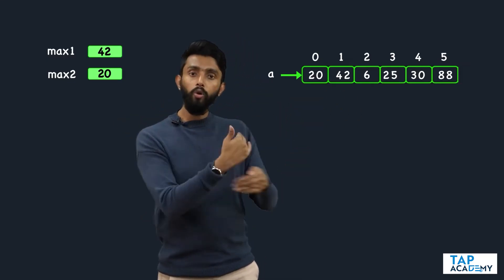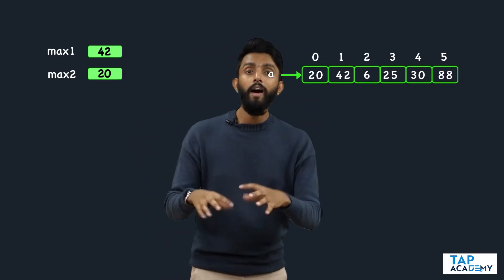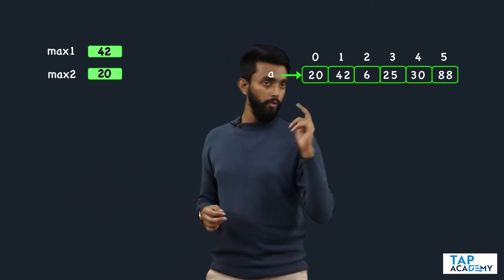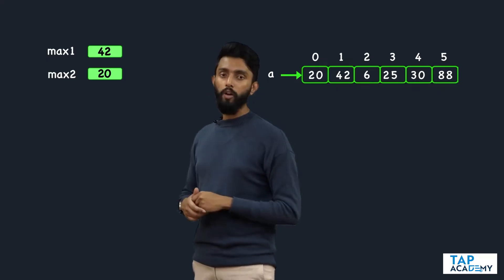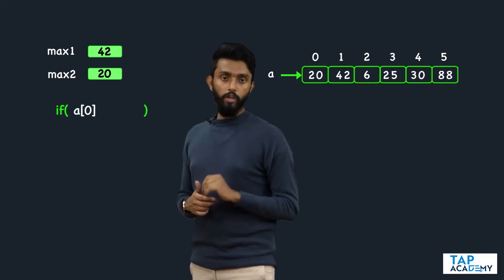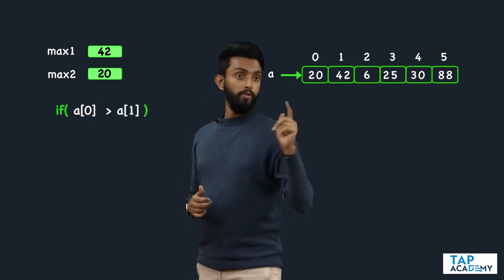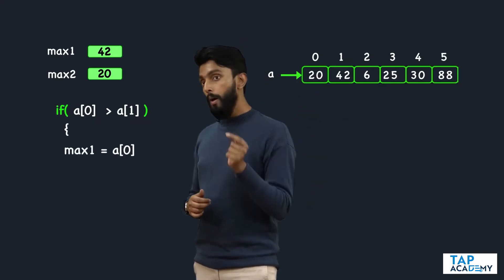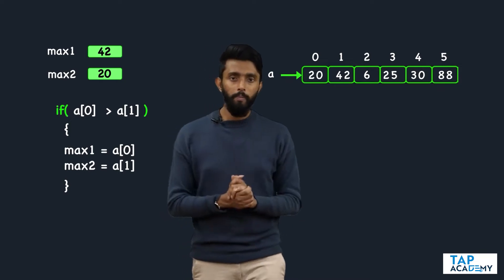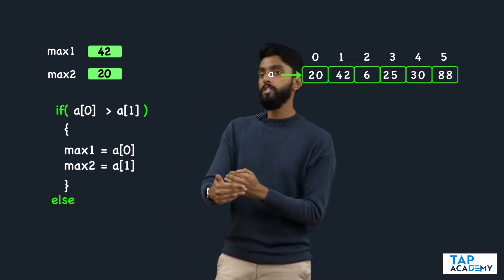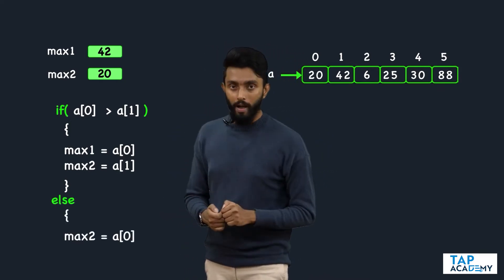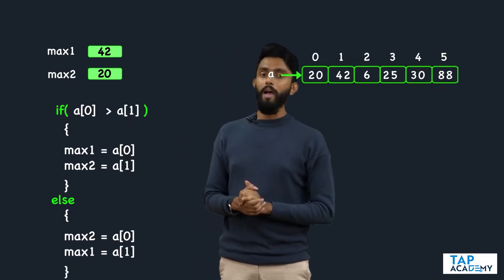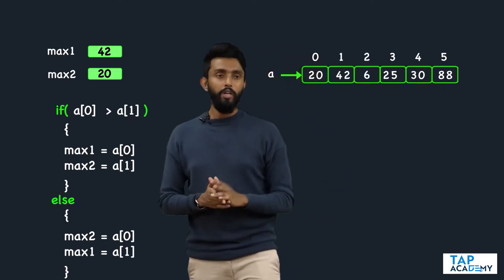So I am assuming out of the first two numbers, whichever is greater is my largest and whichever is smaller is my second largest. Then I write code to validate or invalidate that assumption. I will put an if condition: if array of 0 is greater than array of 1, then max1 is array of 0 and max2 is array of 1. Else, reverse — array of 1 becomes max1 and array of 0 becomes max2.